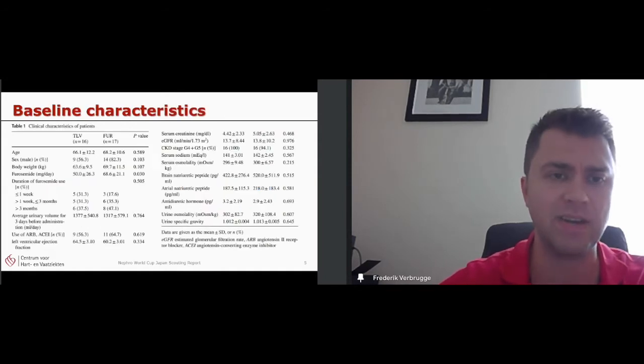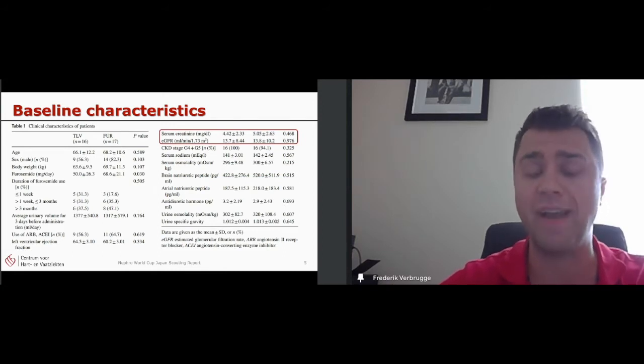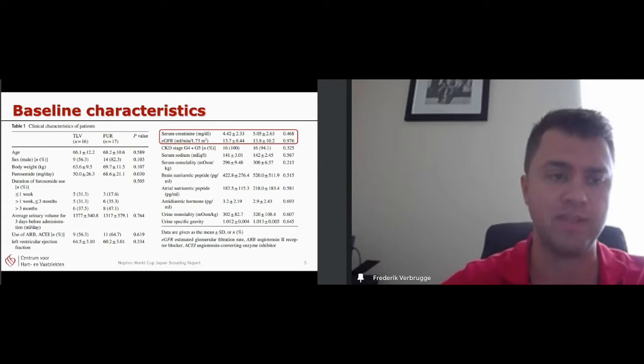When we look at the baseline characteristics of the two study groups, we can see that these were patients 67 years old, about half, a little bit more of them were male. And importantly, when we look at their kidney function, this was very advanced kidney disease. So on average, the GFR was 13 to 14. So nearly all of them were stage four or five, as I've already said.